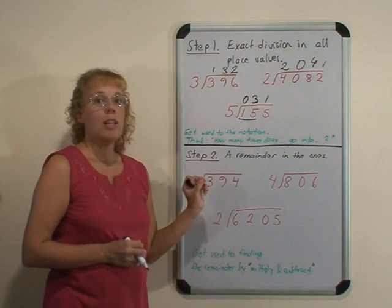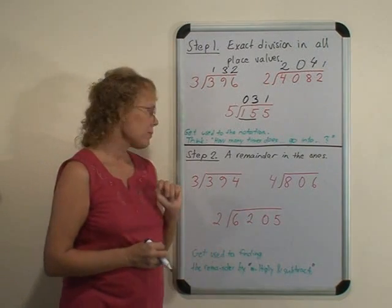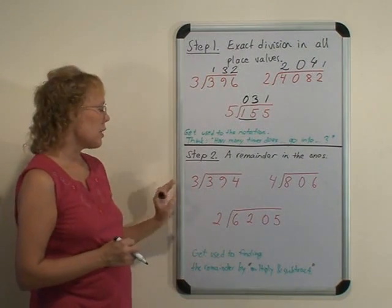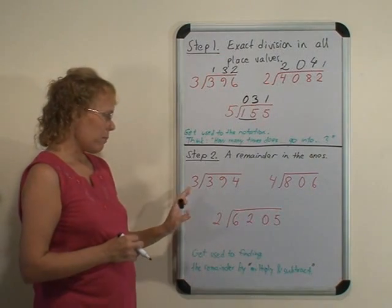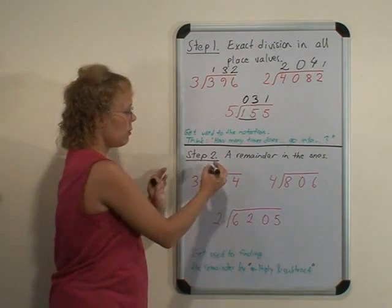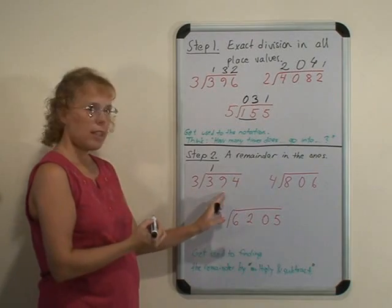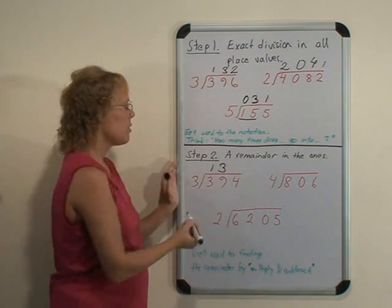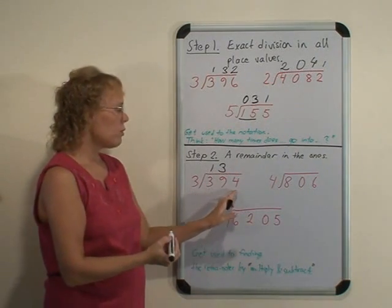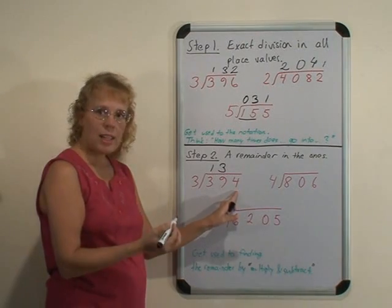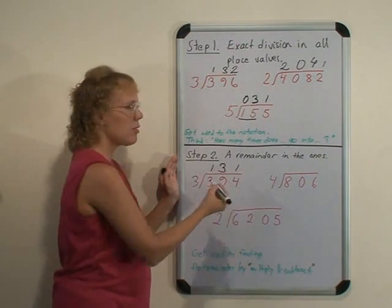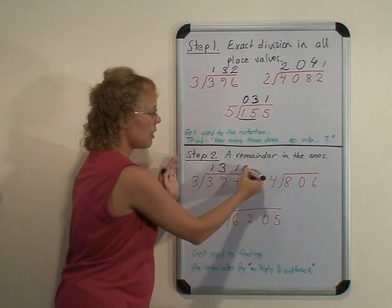Then we will go to the second step, where we have a remainder, but the remainder is in the ones, so it is the easiest way to start. For example, 3 goes into 3 hundreds one time, 3 goes into 9 tens 3 times—those are exact divisions. And then 3 goes into 4 one time, but not evenly. There is a remainder, and children can write it right here.